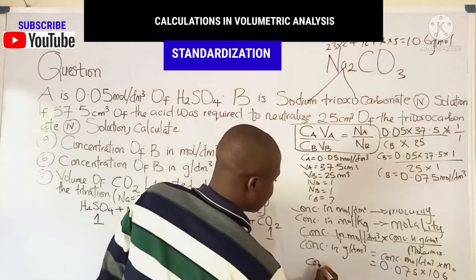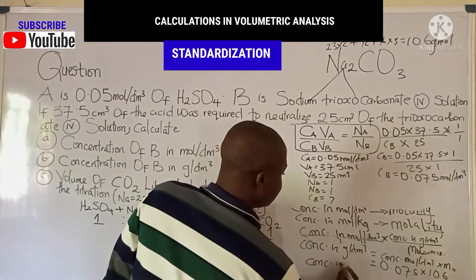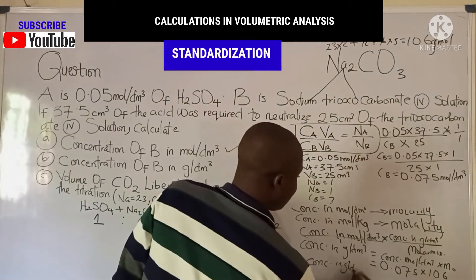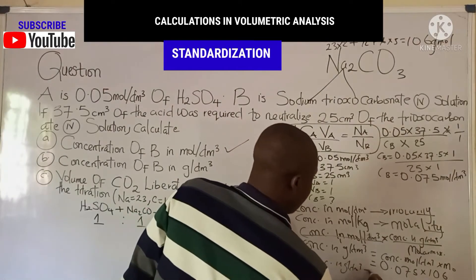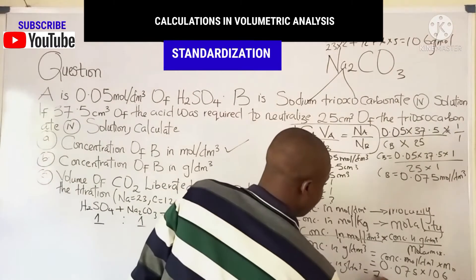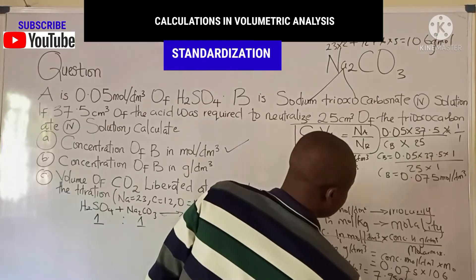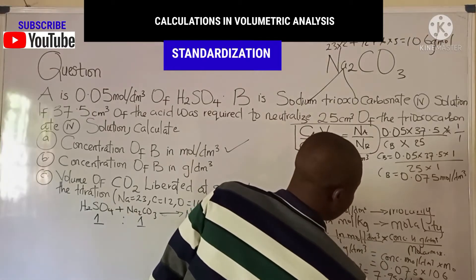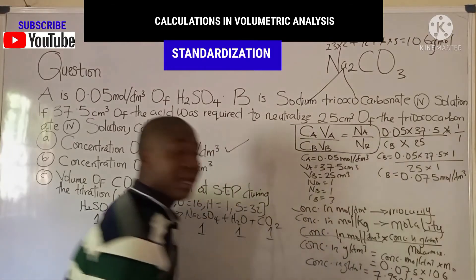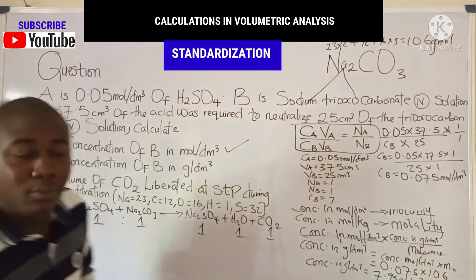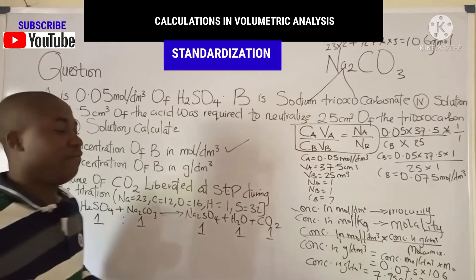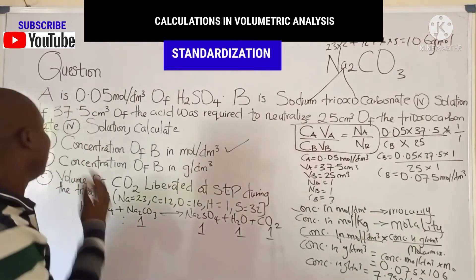The concentration in grams per dm³ becomes 0.075 × 106 = 7.95 grams per dm³.